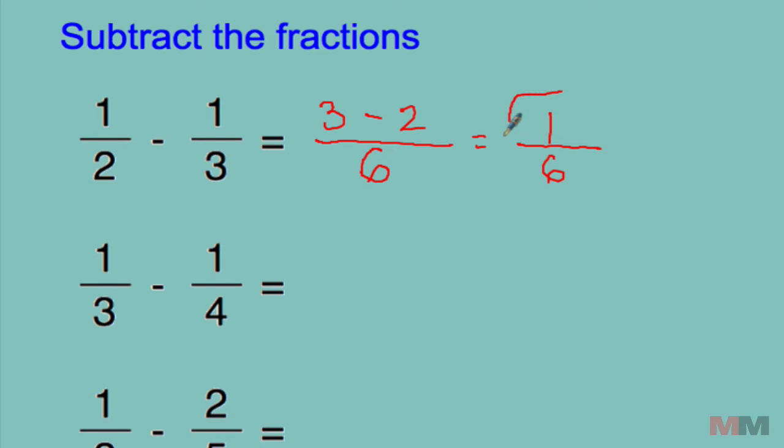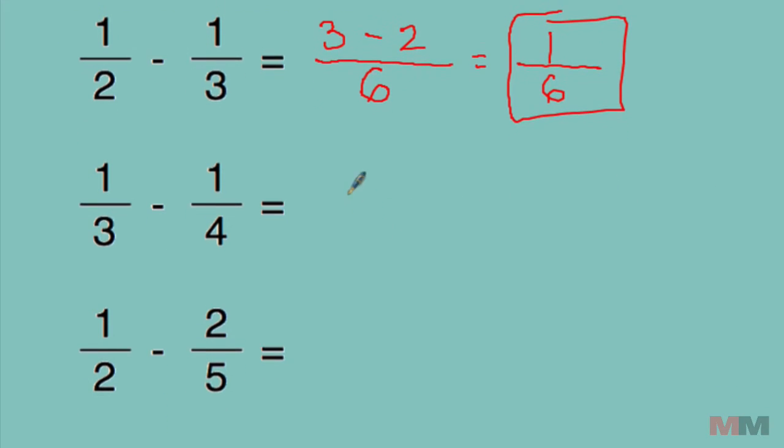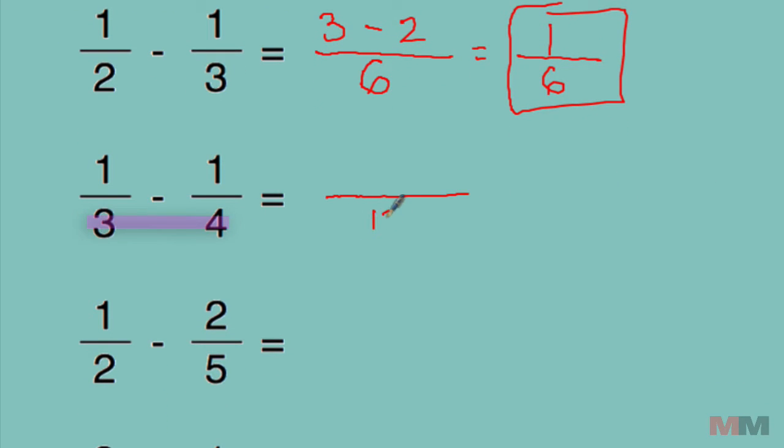Pretty easy, let's do another one. Three times four, that's twelve. Start with the first numerator, multiply to the other denominator, one times four, put that result right there, that's four. Subtract it from the other side, one times three, which is three.